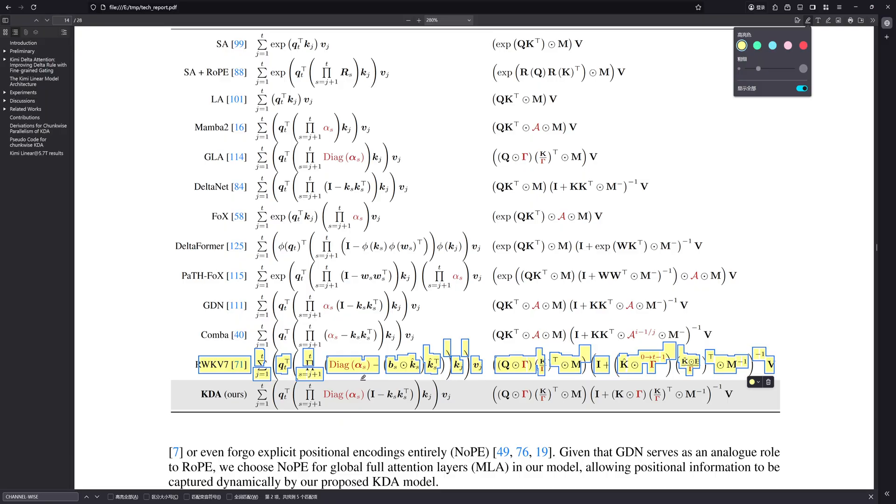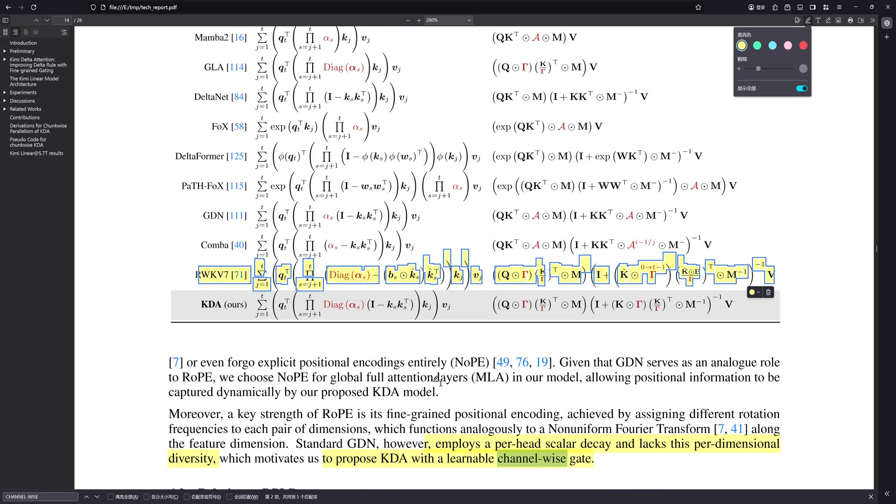Look, despite KDA's performance on those synthetic benchmarks, purely linear structures theoretically still bump up against that finite state capacity ceiling when you're dealing with truly massive, sparse, long-sequence data in the wild. The success of chemilinear, in practice, I think rests on two pillars that are designed to compensate for this theoretical challenge. First, as you mentioned, the inclusion of those periodic full attention, MLA layers. That's not just a nice-to-have. The paper explicitly states the three-to-one hybrid ratio was chosen because long-context retrieval is the primary bottleneck for pure linear attention. It implies pure KDA wasn't enough.